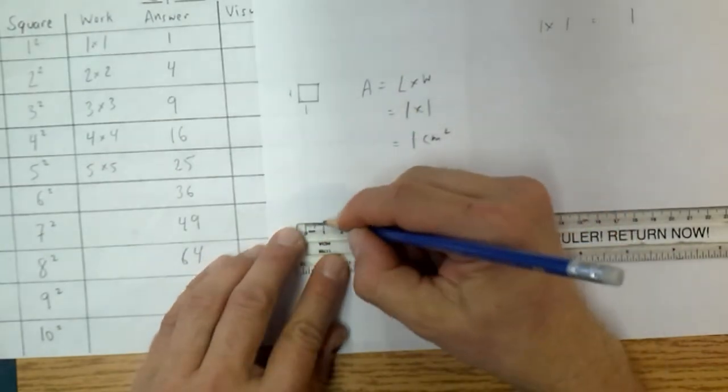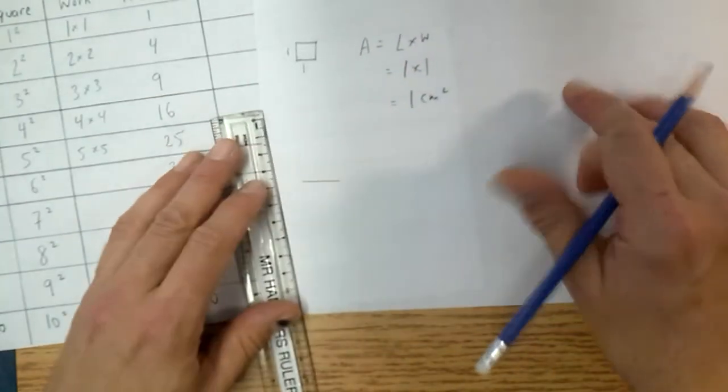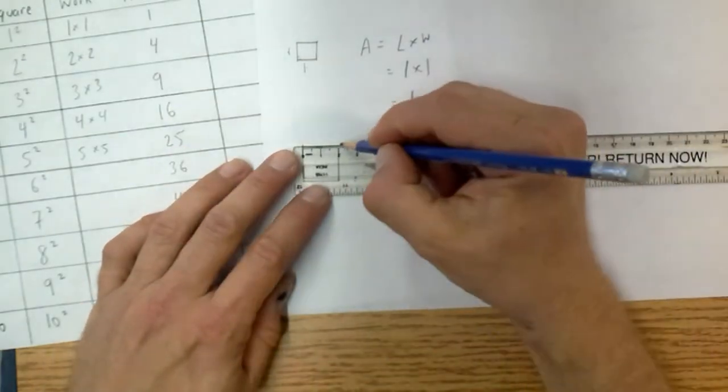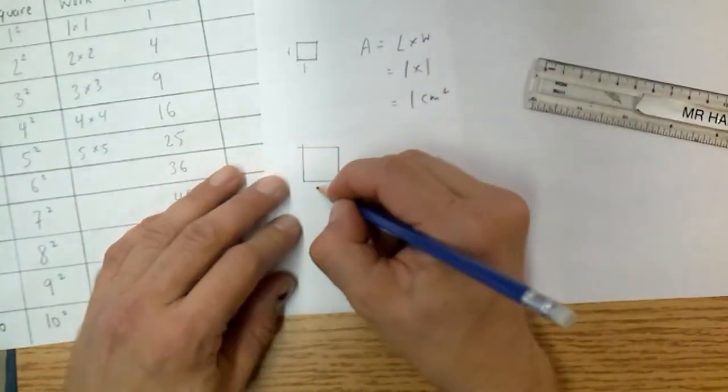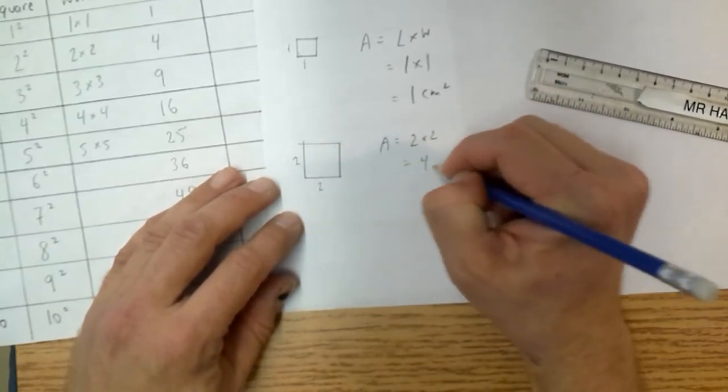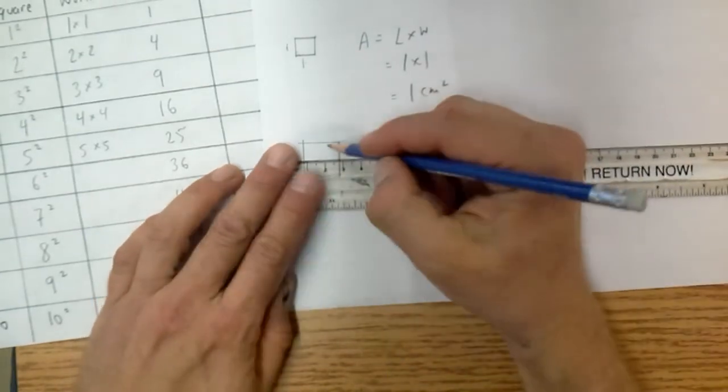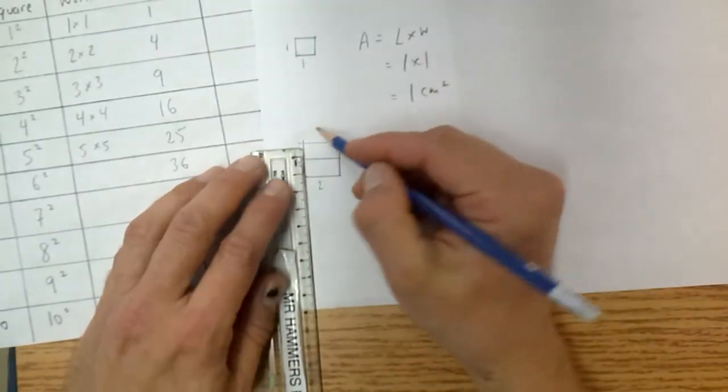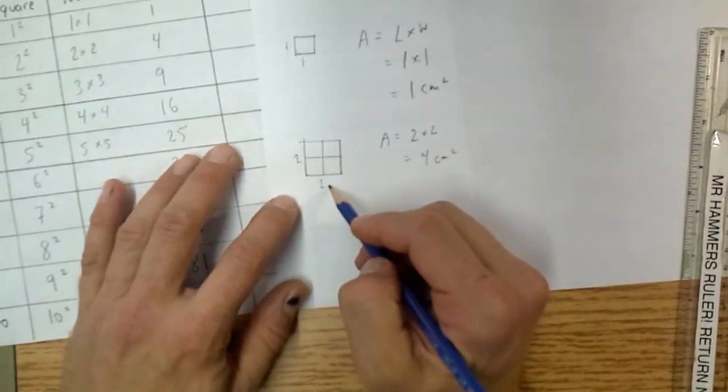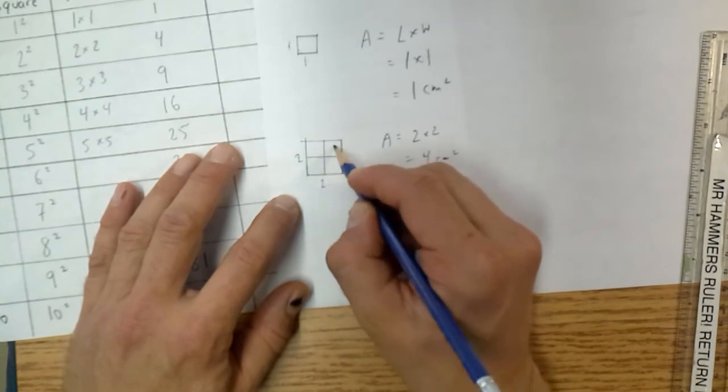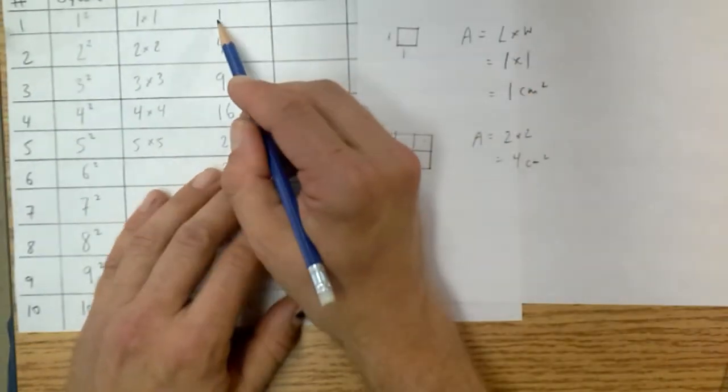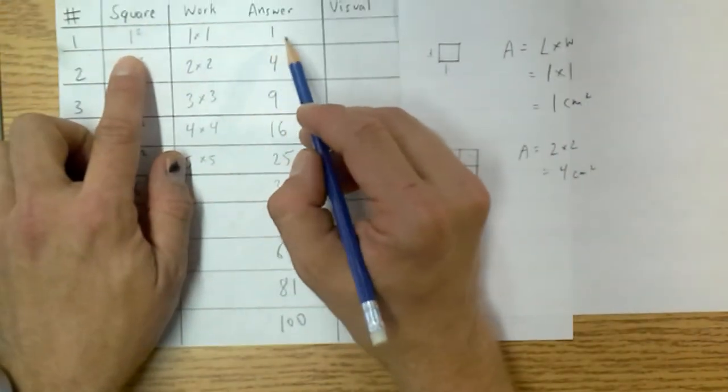Now what if that square was 2 cm by 2 cm just like this? Then each side would be 2 and our area would be 2 times 2 or 4 cm squared. So the area, if we don't even include the units, a 2 by 2 square of any sort gives us 4 squares. A 1 by 1 square of any unit will give us 1 square. So a 1 square gives us 1 square.